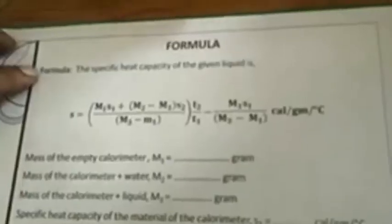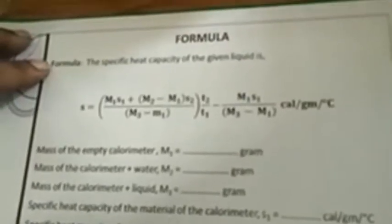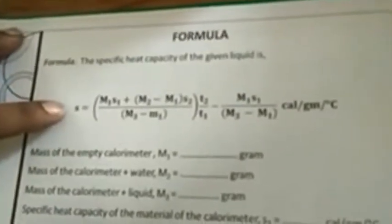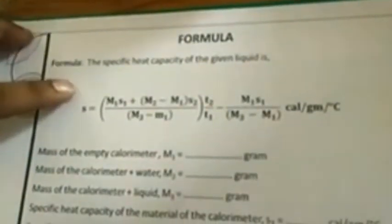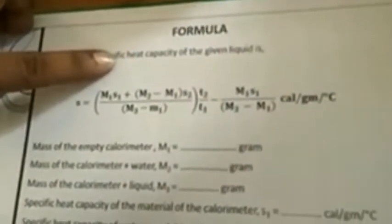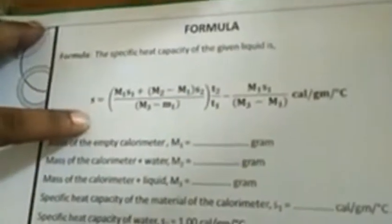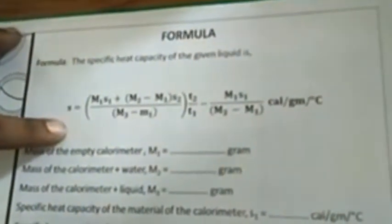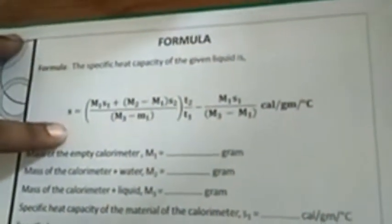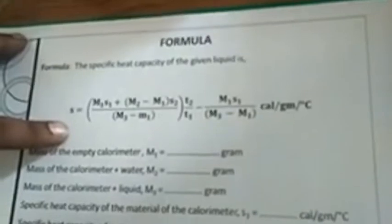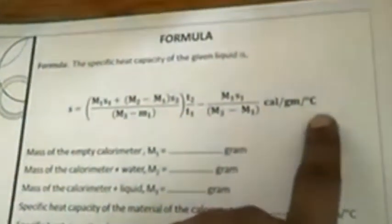Principle. According to the principle of Newton's law of cooling, the rate of cooling of a hot body is directly proportional to the temperature difference between the hot body and the surroundings. Formula. The specific heat capacity of the given liquid is given by: S = (M1·S1 + M2 − M1)·S2 / (M3 − M1)·(T2/T1) − M1·S1 / (M3 − M1), in calories per gram per degree centigrade.